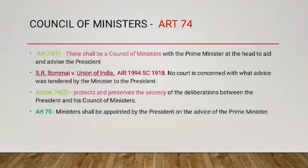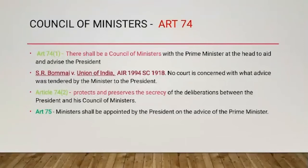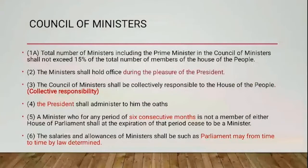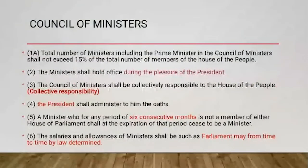Article 74 clause 2 protects and preserves the secrecy of the deliberations between the President and his Council of Ministers. Article 75 provides other provisions as to ministers — the Prime Minister shall be appointed by the President, and other ministers shall be appointed by the President on the advice of the Prime Minister. The ministers shall hold office during the pleasure of the President. The Council of Ministers shall be collectively responsible to the House of People.